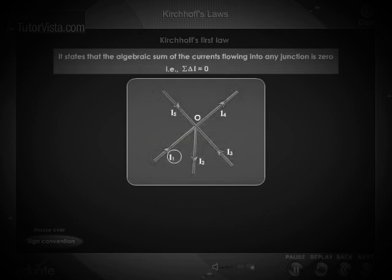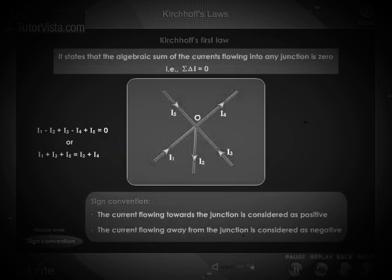Applying the sign convention, I1, I3, and I5 are positive, and I2 and I4 are negative. That is, I1 - I2 + I3 - I4 + I5 = 0, or I1 + I3 + I5 = I2 + I4.